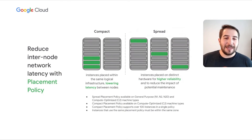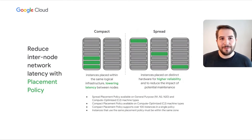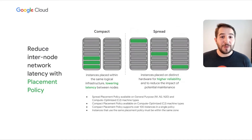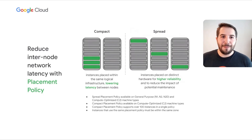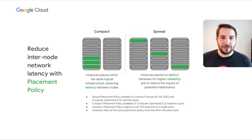In networking, placement policies are a key feature that can significantly reduce internode latency in the cloud — critical for many distributed HPC applications. Placement policy offers two options: spread and compact. Spread is great for high availability, while compact is what most HPC users will focus on. Compact placement policies place VMs in the same logical infrastructure, lowering latency and improving network performance. Compact placement is supported on C2 VMs today, and you can request over 100 instances in a single compact placement policy. Placement policies are also supported in HPC partner software including IBM LSF and Slurm. Note that instances in a placement policy must be in the same zone.